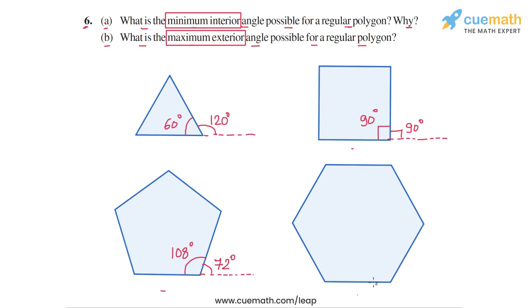And then in a hexagon, the total sum of all the interior angles will be 720 degrees, and that divided by 6 gives us each interior angle, which will be equal to 120 degrees. Each interior angle of a regular hexagon will be 120 degrees, and this means that if we calculate any exterior angle, this will be 180 minus 120, or 60 degrees.